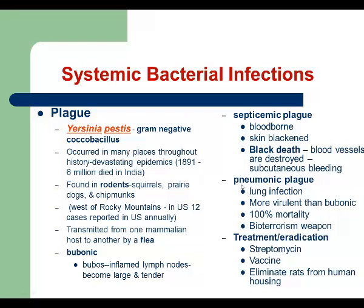The next form is what we call pneumonic plague, and it is a fatal form. In this case, the pathogen will spread into the lungs. As medical workers, you have to remember about this form of plague because medical workers usually get infected with this form when they take care of infected patients and do not follow precautions. Pneumonic plague is a fatal form with a 100% mortality rate.